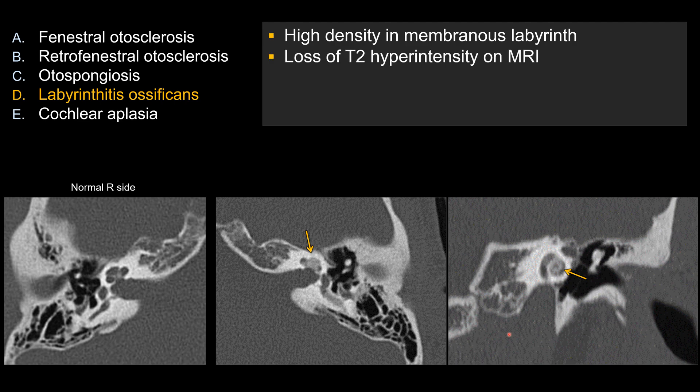If I were to show you an MRI, I would show you that there's a loss of T2 signal within a heavily T2-weighted sequence. So the cochlea will be dark on T2-weighted sequence.